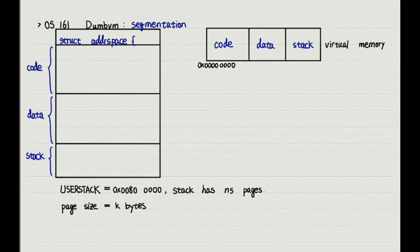Recall that in segmentation, to translate the virtual address in a particular segment, we need to use the relocation register value and limit register value of that segment.